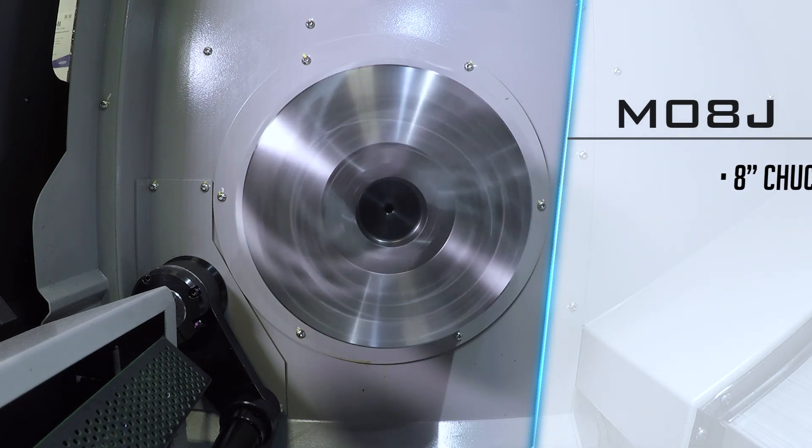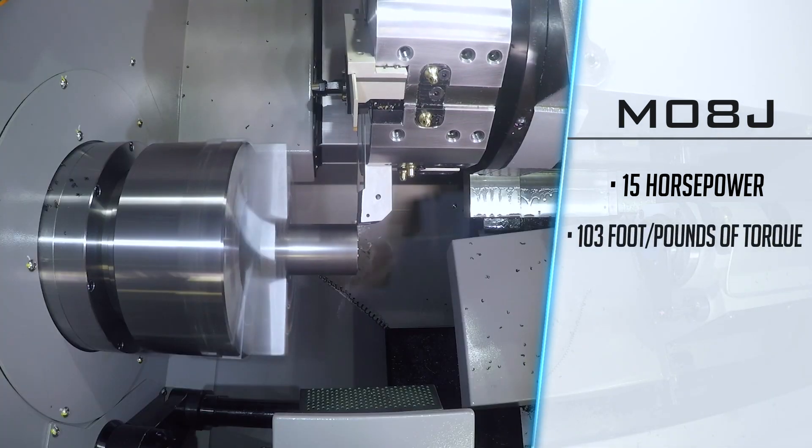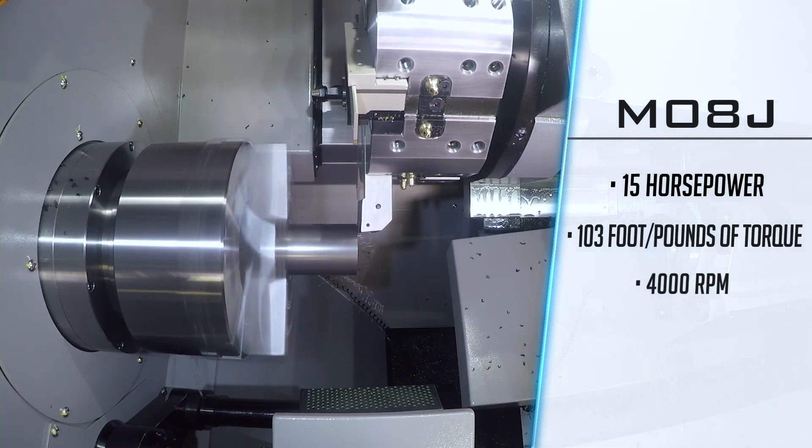The belt-driven spindle produces 15 horsepower and 103 foot-pounds of torque while providing a max spindle speed of 4,000 RPM.